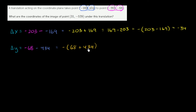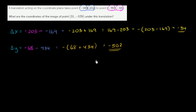430 plus 60 is 490, plus another 8 plus 4, plus another 12, so that's going to get us to 502. This is going to be negative 502. So this translation shifts us in the x direction by negative 34, and it shifts us in the y direction by negative 502.